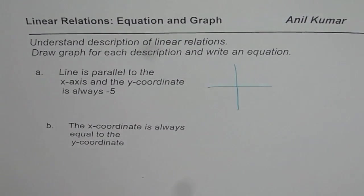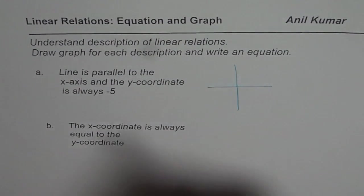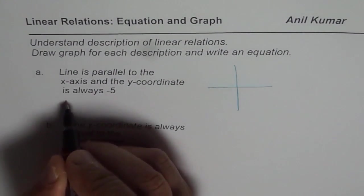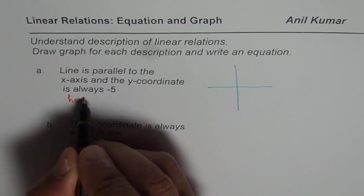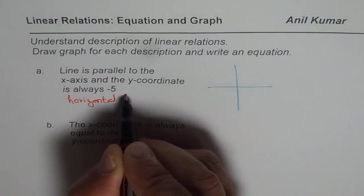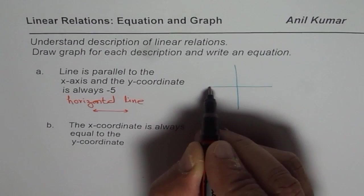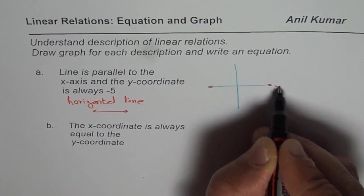Let us say that is our coordinate plane. We are saying that line is parallel to x-axis. That means we are talking about a horizontal line, kind of like this. It is parallel to x-axis. This is the x-axis we are talking about.